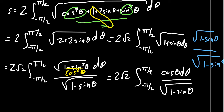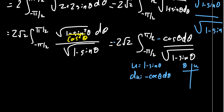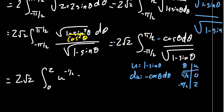Now u-substitution saves us. Let u equal 1 minus sine theta, so du equals minus cosine theta d theta. We put a negative sign to compensate. Switching bounds: at theta equals pi halves, u equals 1 minus 1 equals 0; at theta equals negative pi halves, u equals 1 minus negative 1 equals 2. Flipping the order to correct for the negative sign, we end up with 2 root 2 times the integral from 0 to 2 of u to the negative one half d theta.